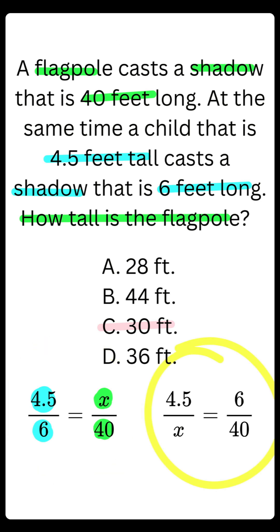Now notice the different setup over here, but look at how things are going to be matching. Child height at the top, flagpole height at the bottom. Child shadow at the top, flagpole shadow at the bottom. Do you see the difference here? In our first proportion, child on the left, flagpole on the right. Second proportion, we have child at the top, flagpole at the bottom.